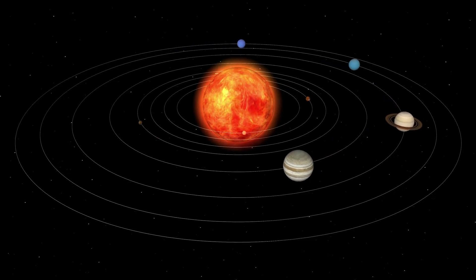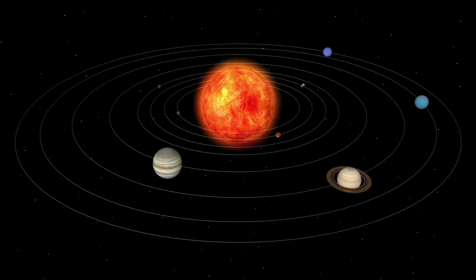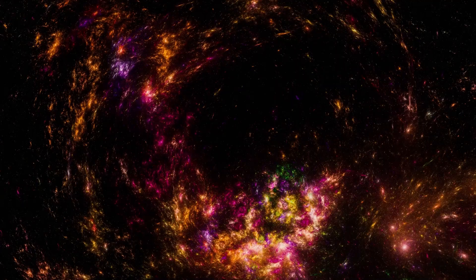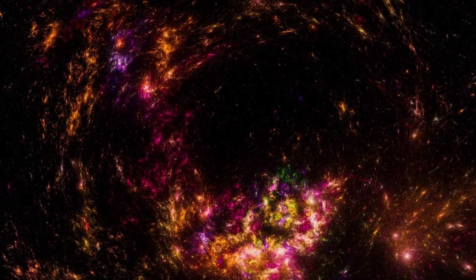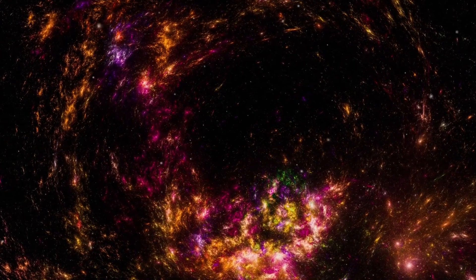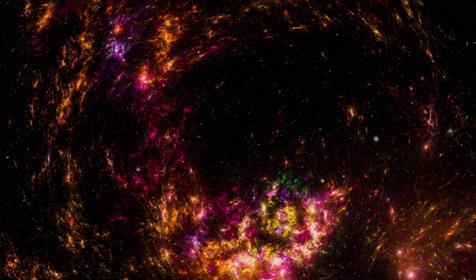When a star is getting close to the end, it usually doesn't go quietly. There are signals, signs that something is happening. And back in late 2019, Betelgeuse gave us one of those signals in dramatic fashion.